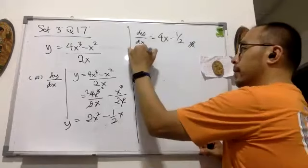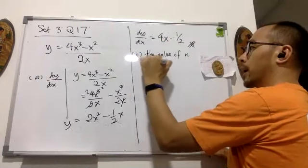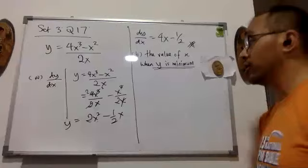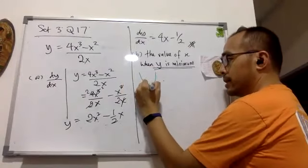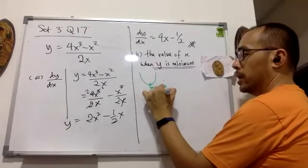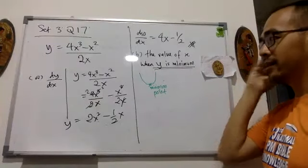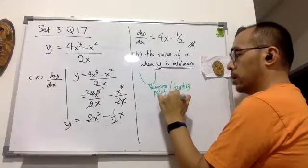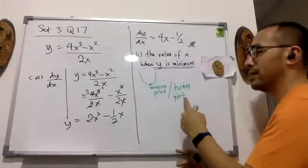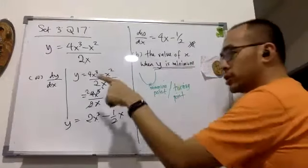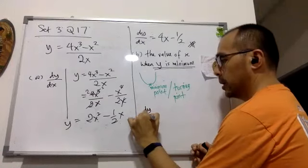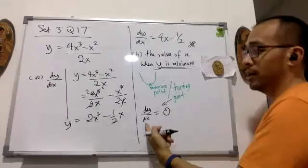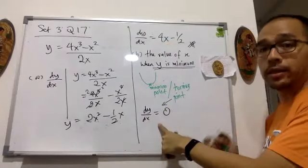Now for question D: find the value of x when y is minimum. This is very important. When y is a minimum, it is known as a minimum point. Every minimum and maximum point is also known as a turning point in differentiation. And when we talk about turning points, dy/dx equals 0. So if it is a minimum point, dy/dx equals 0, meaning the expression you just differentiated must equal 0.